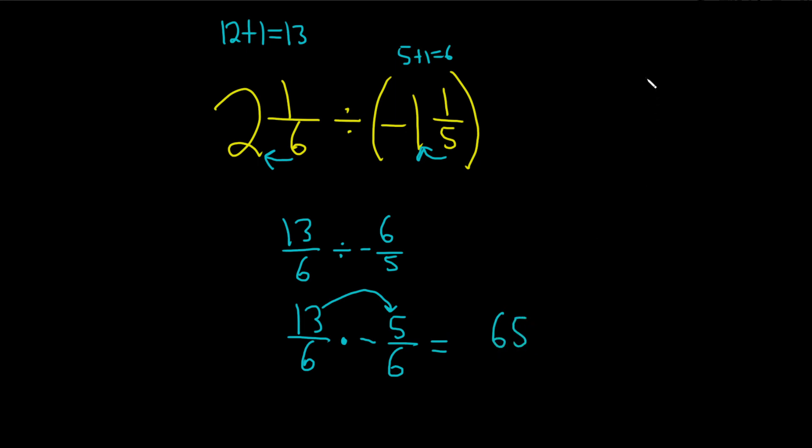You could do it the long way too, right? 13 times 5, 5 times 3 is 15, you write down the 5 and you carry the 1. 5 times 1 is 5, 5 plus 1 is 6, so you get 65.